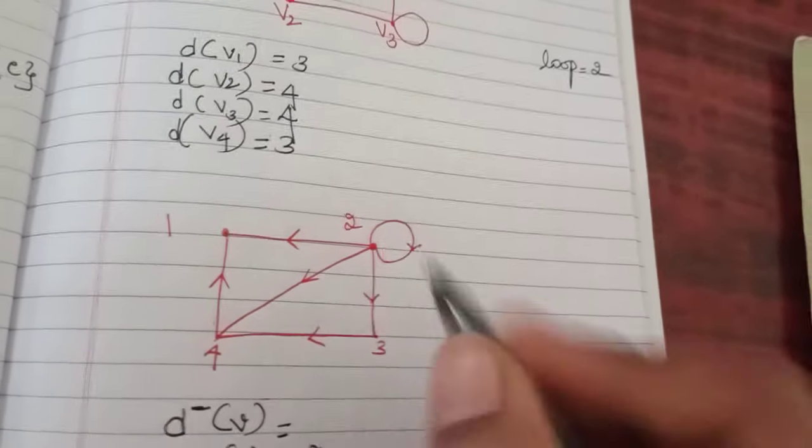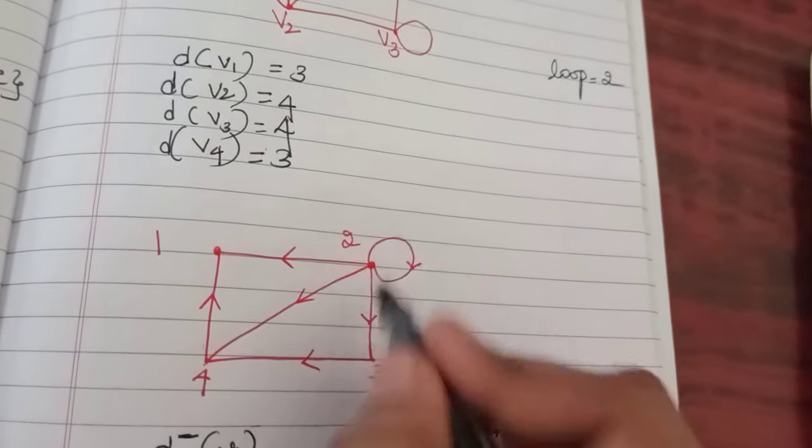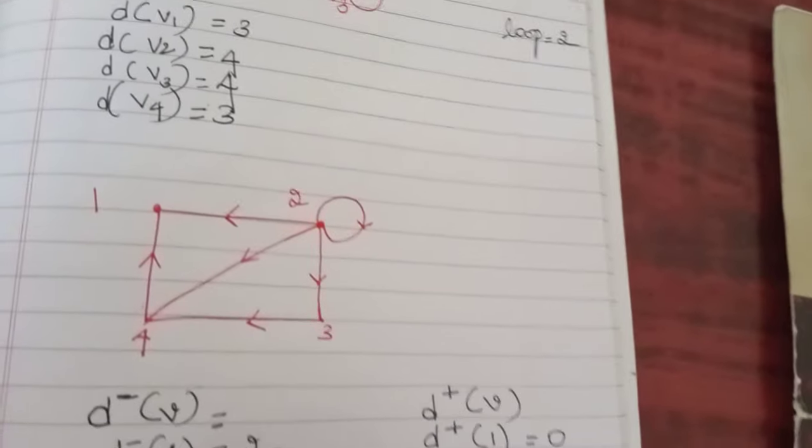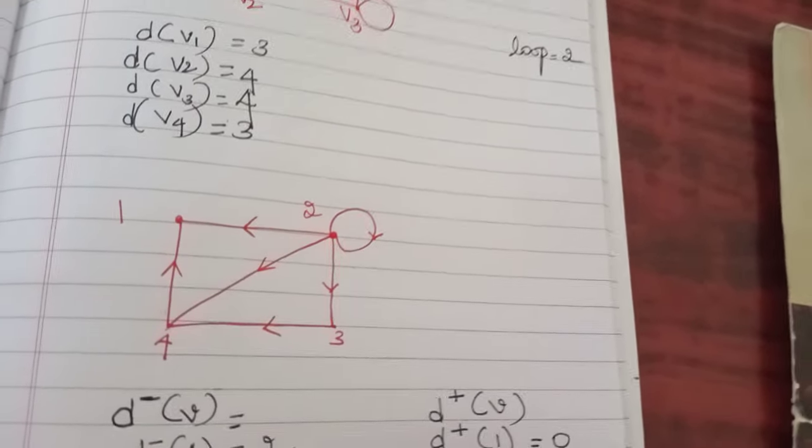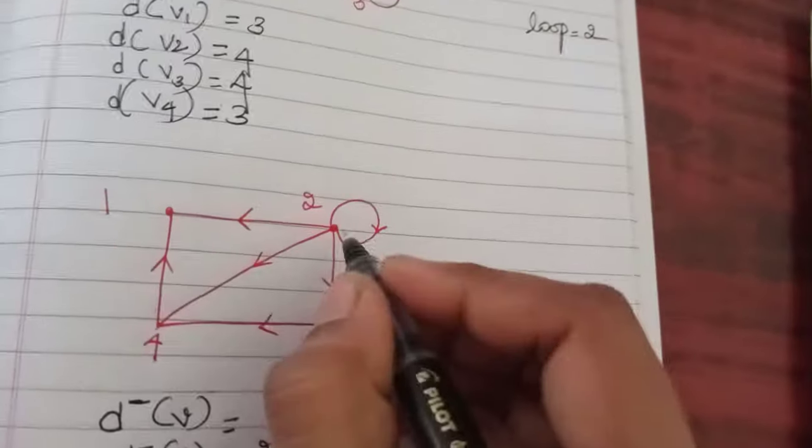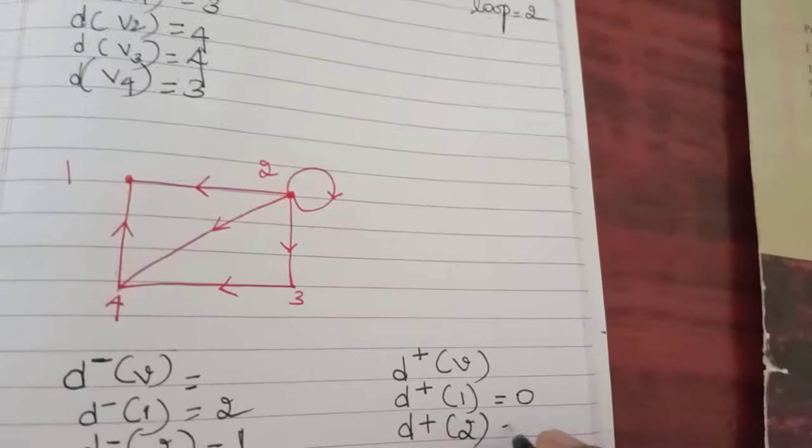In-degree of two, since it has a loop, you should count one as your in-degree and one as your out-degree. So in-degree is one, and for out-degree it is one. For the loop, it is two.